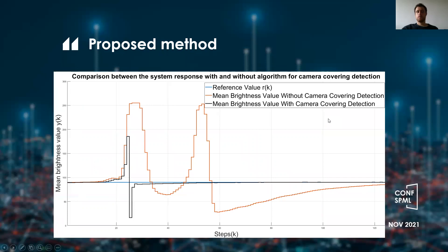The comparison of system response with and without the camera covering detection algorithm can be seen in this graph. The red plot shows the changing mean brightness value without camera covering detection, while the black plot represents the change in mean brightness value with camera covering detection. The blue graph is the reference value. It is seen that the system performs much better with the camera occlusion detection algorithm. However, although the mean brightness value converges rather quickly, there is still a big peak and undershoot right after, which is mainly the consequence of the delay present in the system. This delay can also affect stability and is one of the non-linearities mentioned before.